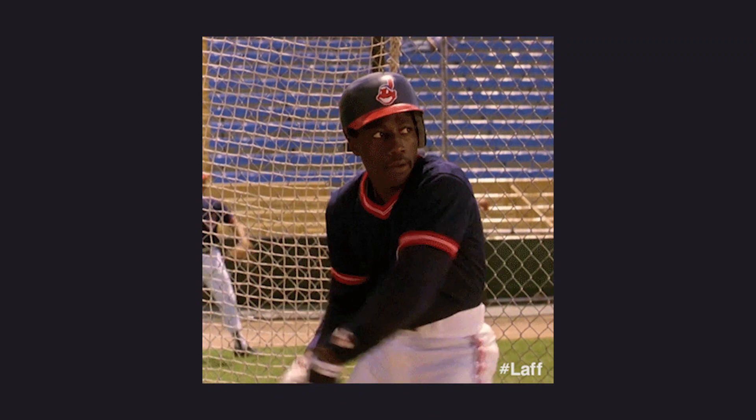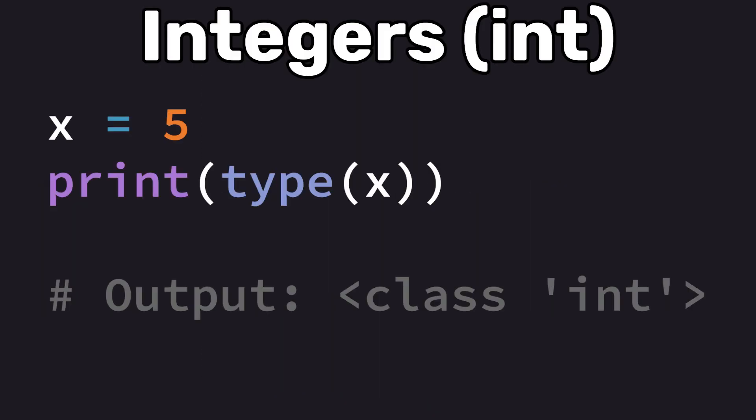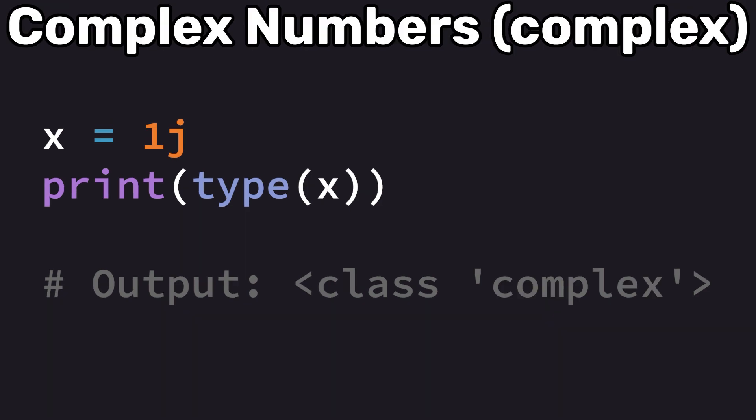The first data type I'll be covering are numeric data types, starting with integers, which are whole numbers both positive and negative without a decimal point. Floats, or floating point values, are numbers with a decimal point. Python also supports complex numbers, which are written with a j as the imaginary part.